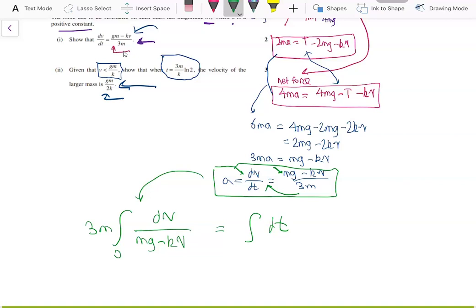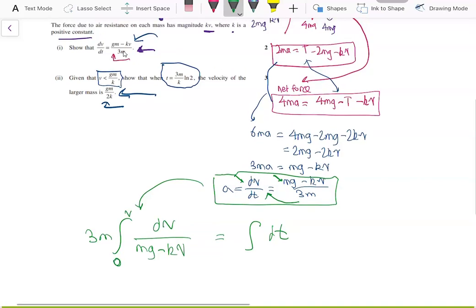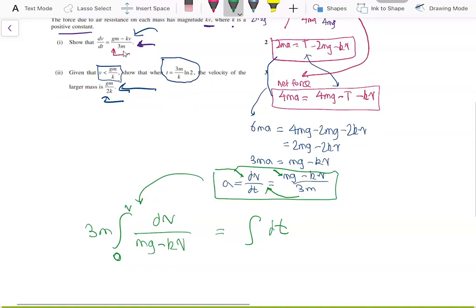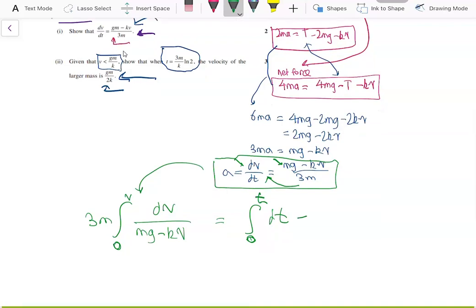This will integrate from 0 to v. So 0, the starting speed is 0 and it ends at speed v. Starting time is 0, ending time is t. So the right hand side integral will just equal, we just integrate t from 0 to t, which is just t.